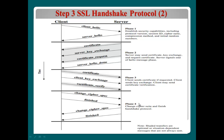In phase four, if the server and client successfully exchange certificates and keys, they change the cipher spec. The cipher spec starts in a pending state, but once the exchange is successful, they finalize it. They then finish the handshake protocol by sending a finished packet.